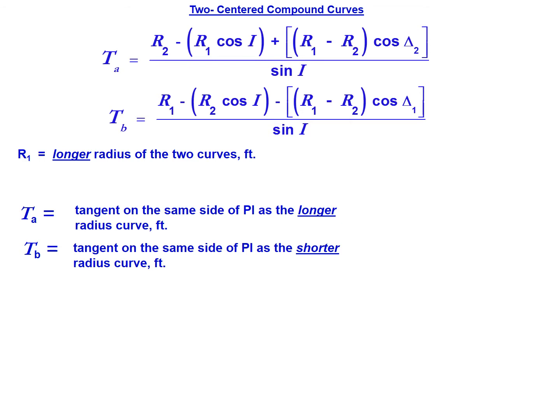R1 in these equations represents the longer radius of the two curves, and R2 is the shorter radius of the two curves. The subscripts 1 and 2 are very important, denoting the larger and smaller radius curves.